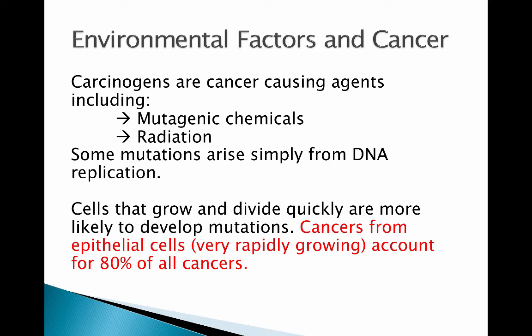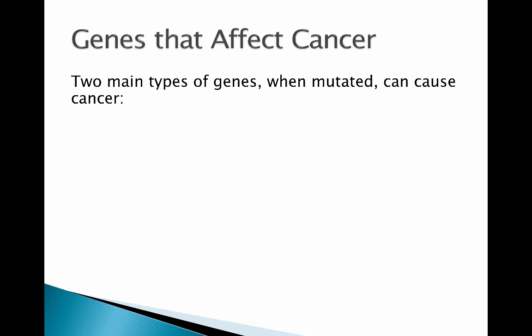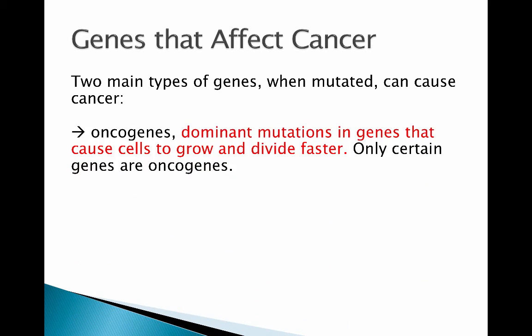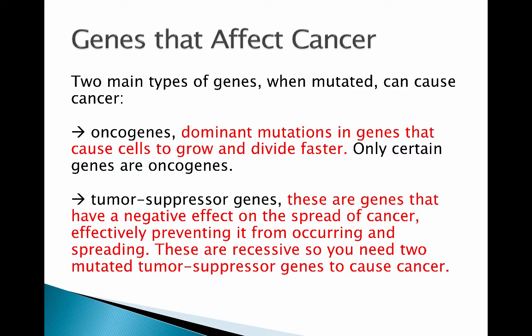Two types of genes, when mutated, can cause cancer. The first is the oncogene. Oncogenes start out as proto-oncogenes — normal, useful proteins. When they mutate they can cause cancer, and the mutated form is called an oncogene. These are dominant mutations, so having just one bad copy is enough to cause problems regardless of whether a good copy exists on the other chromosome.